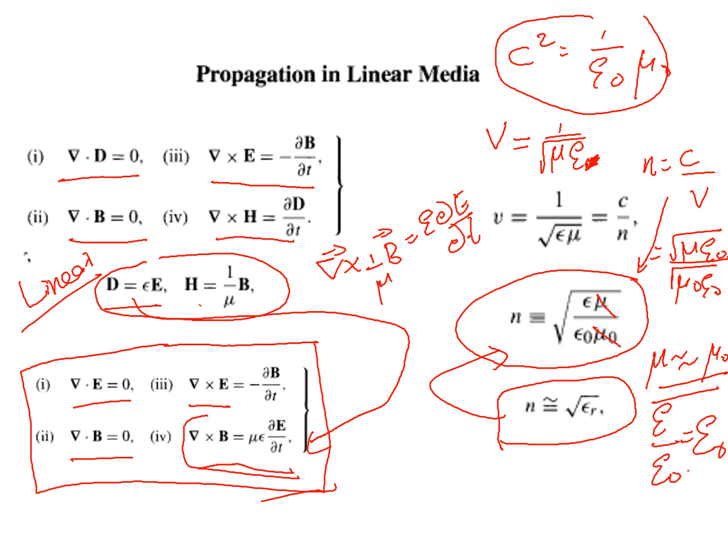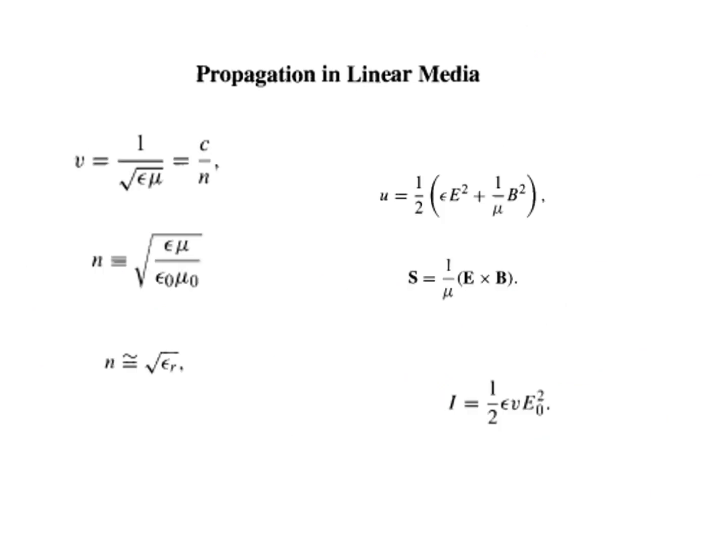So what we discussed here is about the propagation: electromagnetic waves propagate through a linear homogeneous medium with permeability mu and permittivity epsilon with a speed v equal to 1 by root of mu epsilon. And the refractive index is related to the permittivity or dielectric constant of the medium as n equal to root of epsilon r.